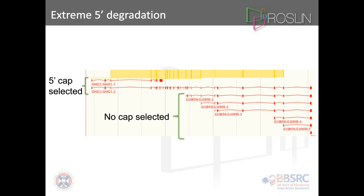Here's an extreme case of 5' degradation. We had a non-cap-selected library at the bottom compared to a 5' cap-selected library. In the non-cap-selected library, we never even got the full length of the transcript — actually less than half. This is quite problematic because without the cap-selected library we wouldn't have known we were missing more than half of it. This would cause issues identifying open reading frames, coding potential, and promoters — the promoter is at the true transcription start site shown in the cap-selected model.